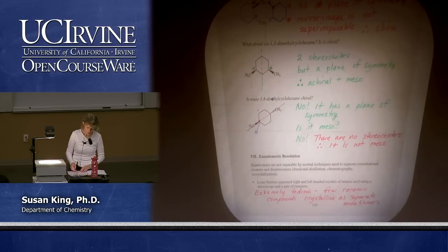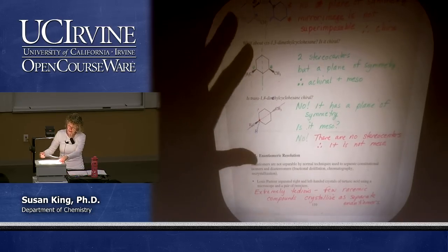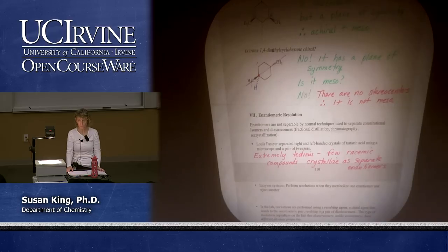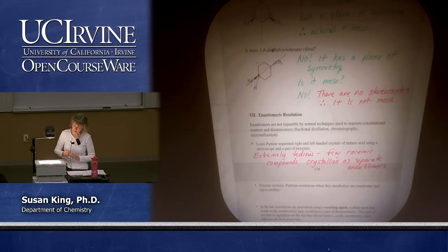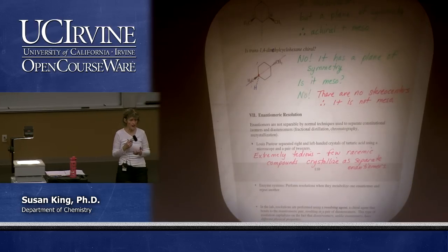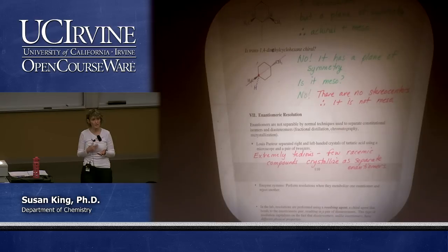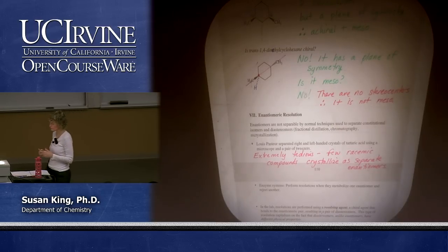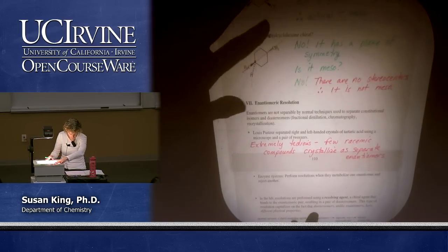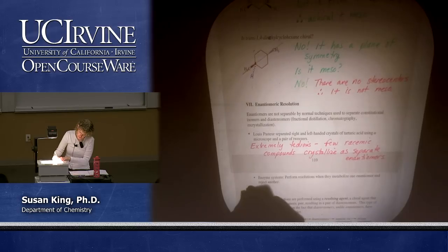He got lucky with that particular compound. Enzymatic systems — remember enantiomers behave differently with other chiral compounds. Enzyme systems perform resolutions when they metabolize one enantiomer and reject another. For ibuprofen the S enantiomer is active in the body and the R is not — the R is just excreted while the S is used. We can also do this with a racemic amino acid — if you eat racemic alanine, for example.